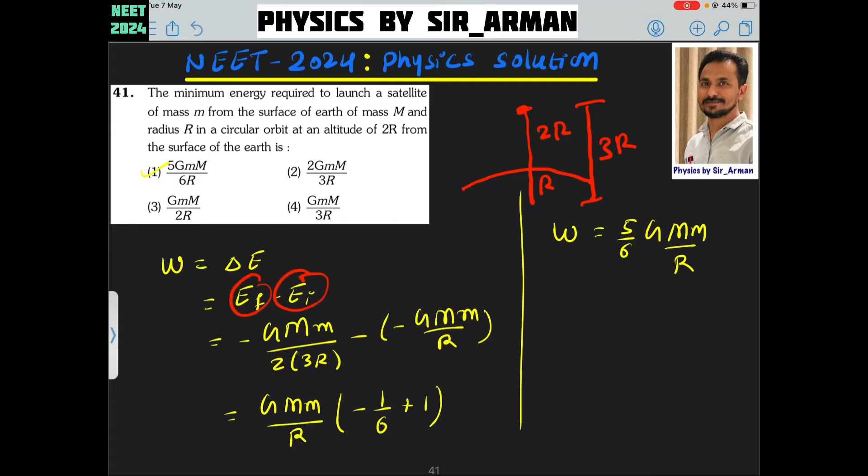E final minus E initial. For energy we have the equation minus GMm by 2r. This is the equation for the energy of a satellite. This is the equation for the total energy.